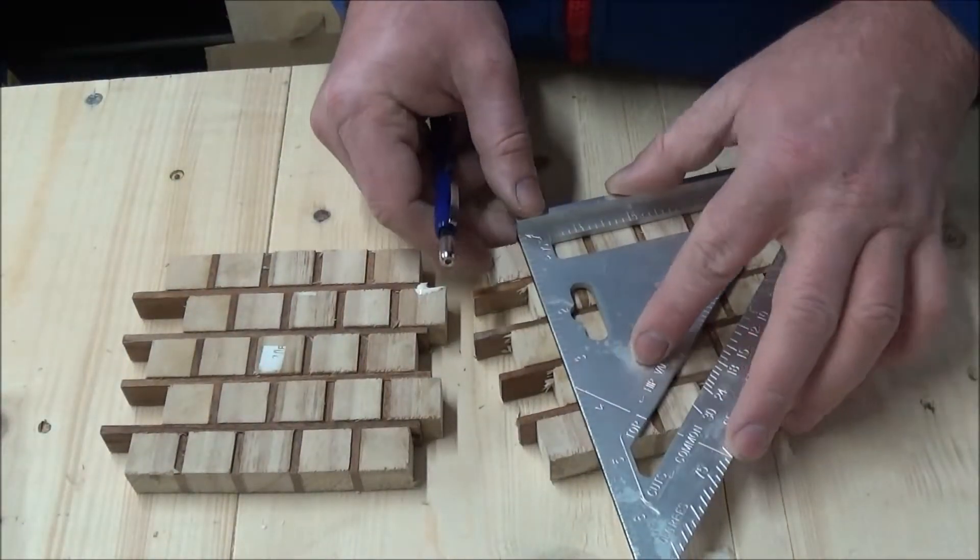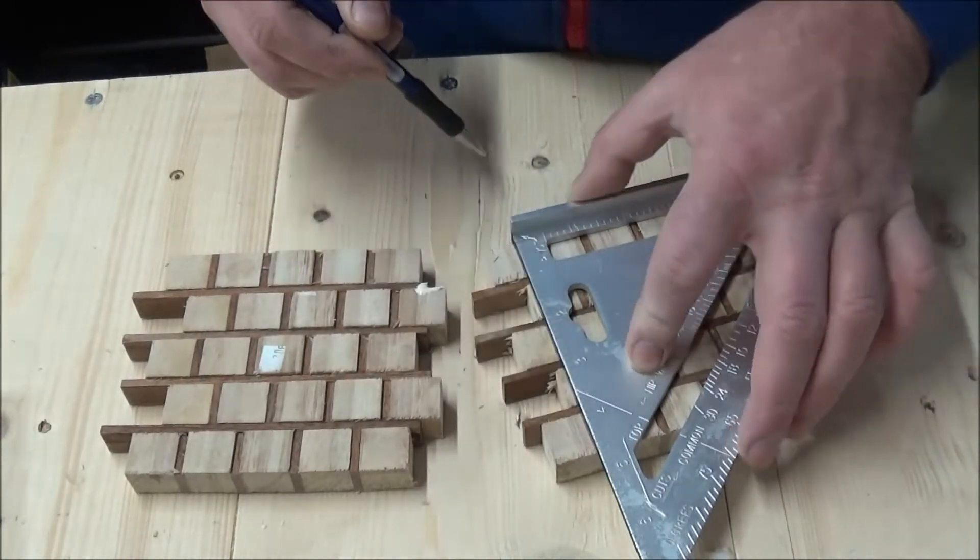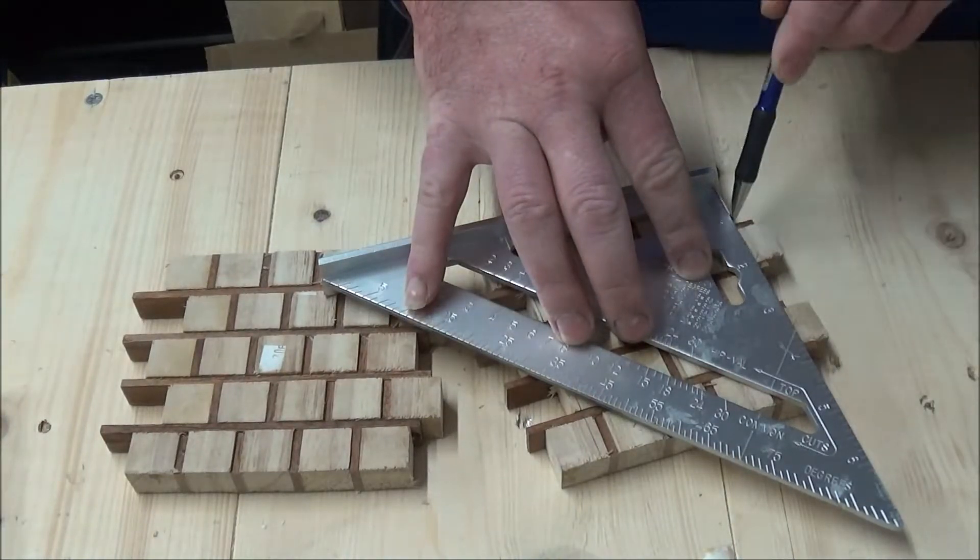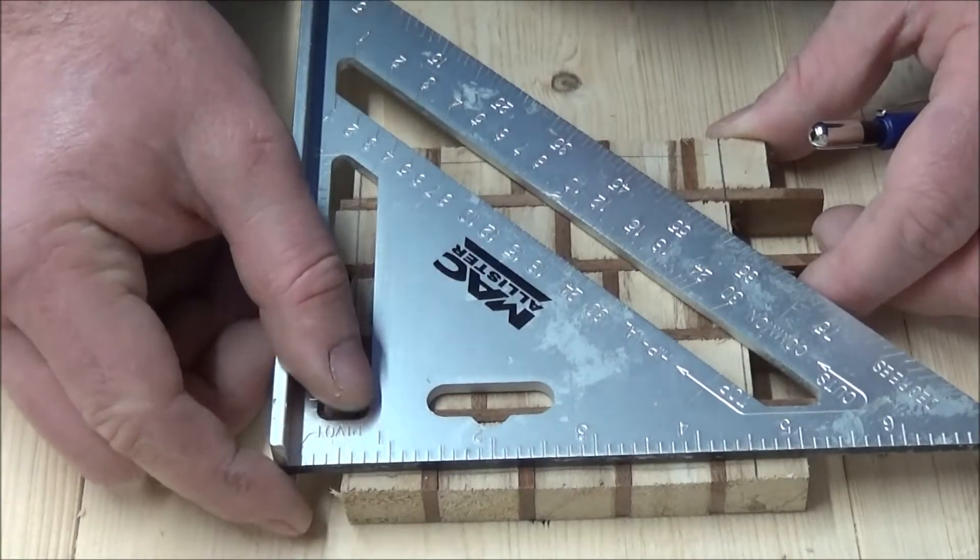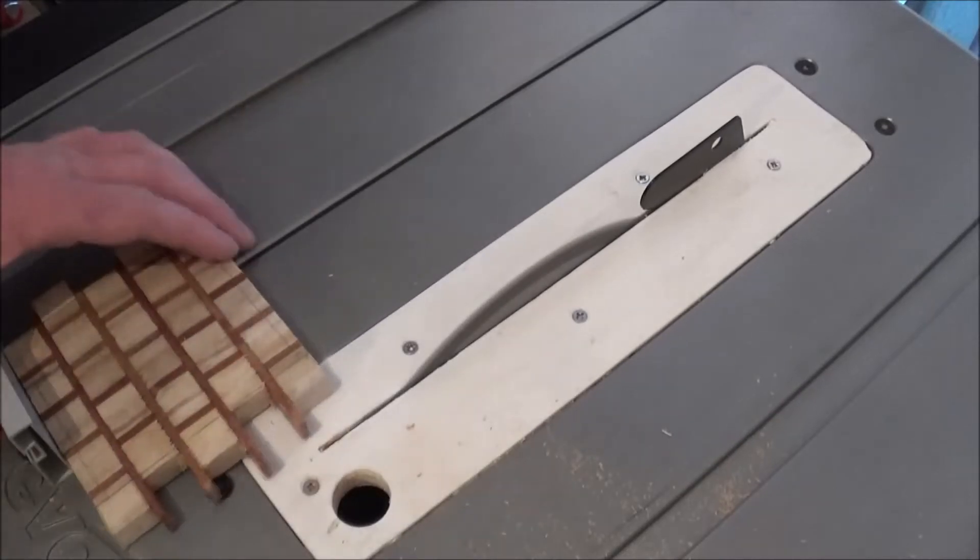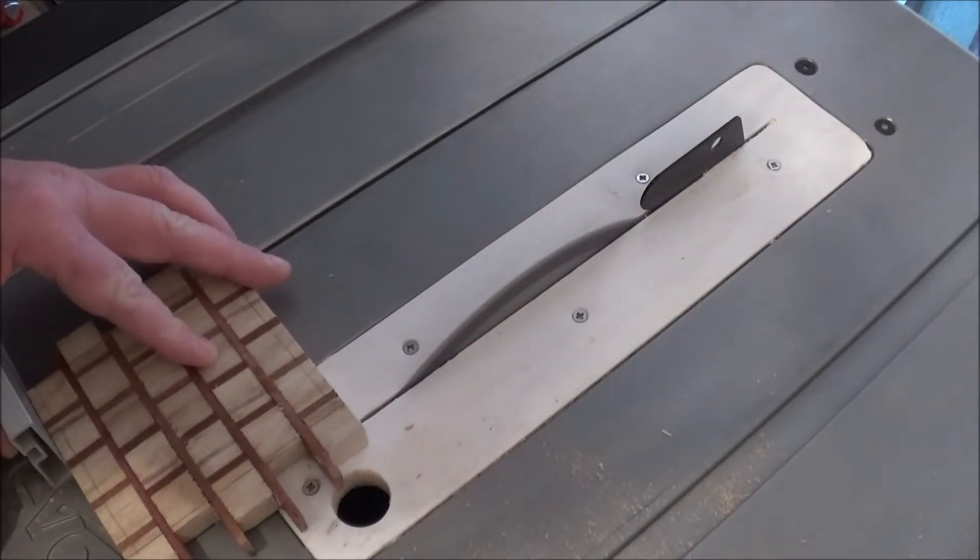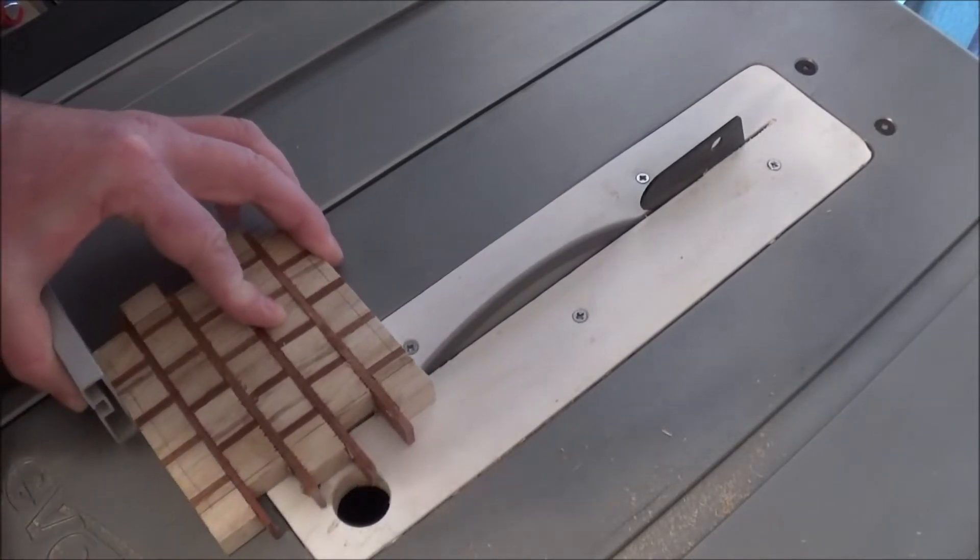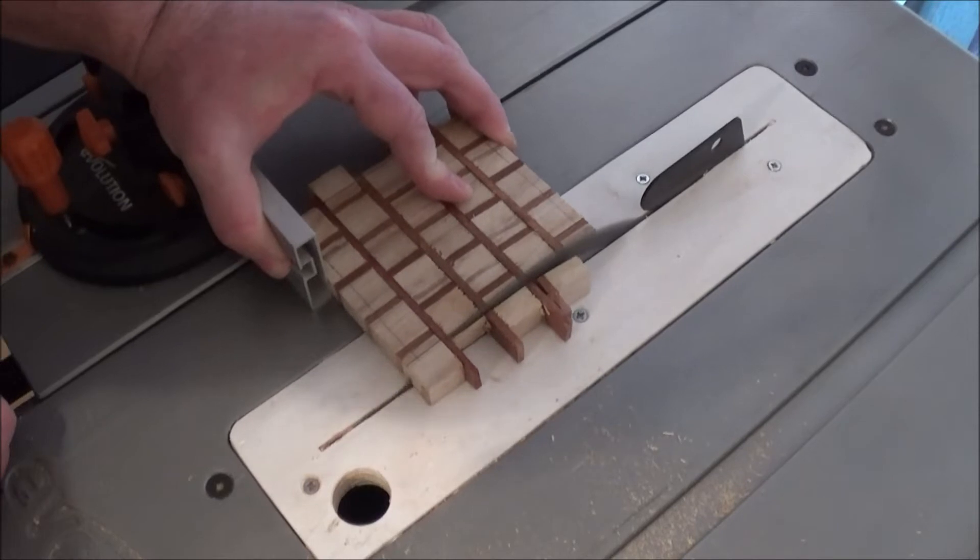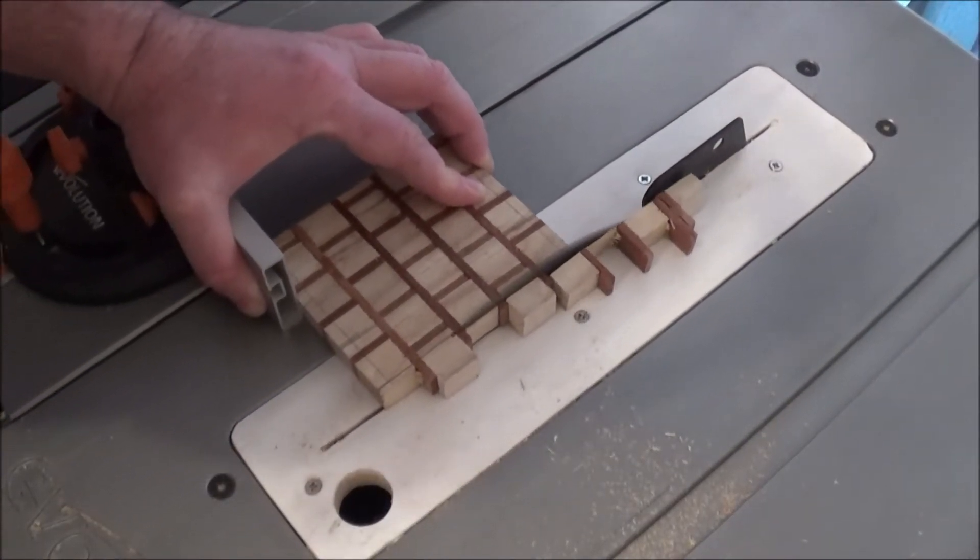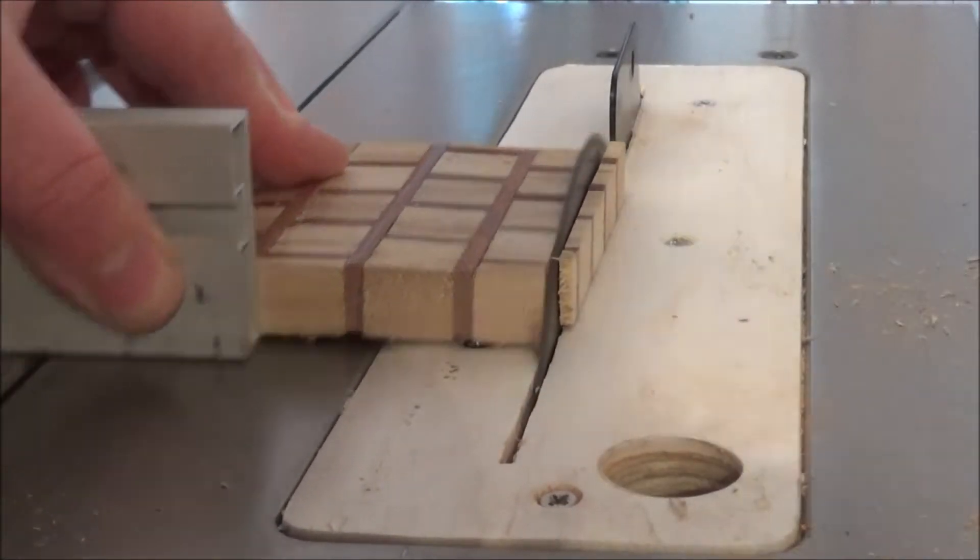So the next day I went back out with my quick square and marked up where I wanted to trim the excess off the edges. Then I marked the top and bottom as well for a flush cut. Over to the table saw, I just trimmed off along the marks that I made, squaring everything up.